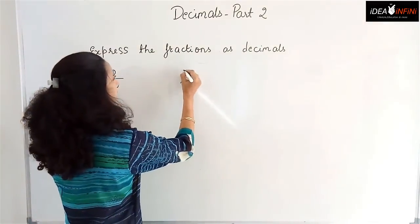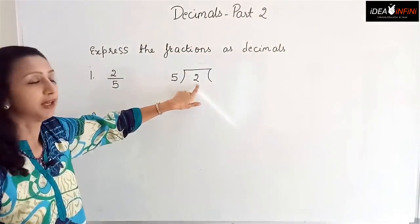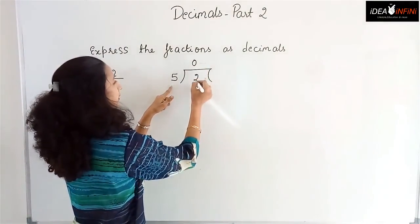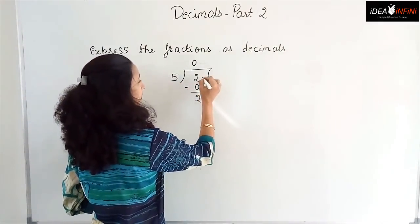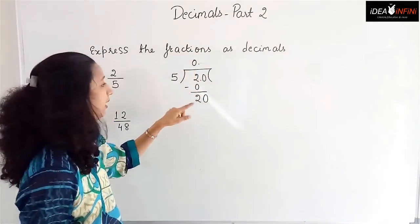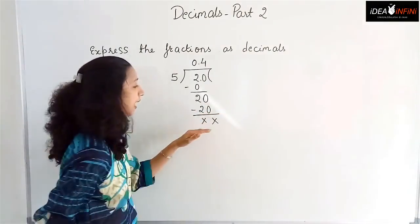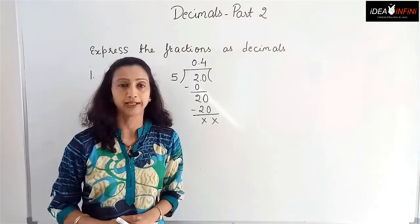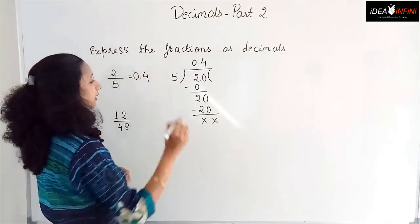The numerator goes inside the division bracket and the denominator goes outside. For 2 by 5: 5 goes into 2 zero times, remainder 2. We add a zero and place a decimal point, making it 20. 5 fours are 20, remainder 0. So 2 by 5 equals 0.4. Since 2 by 5 is a proper fraction, the answer must be less than 1 — 0.4 confirms this is correct.